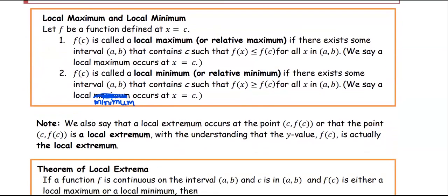The local maximum and local minimum. Let f be a function defined at x equals c. f is called the local maximum or the relative maximum if there exists some open interval (a, b) that contains c such that f(x) is less than or equal to f(c) for all x in the open interval (a, b). We say a local maximum occurs at x equals c.